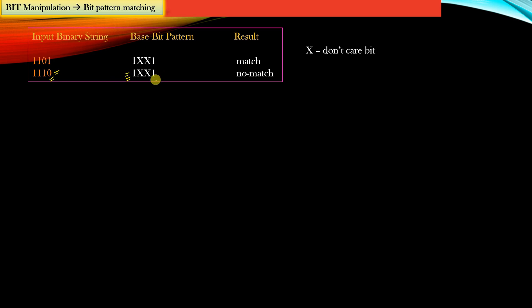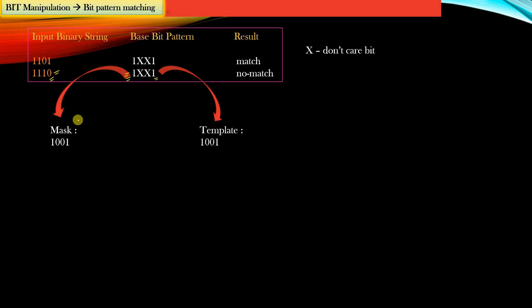For a given base bit pattern, we need to compute two things: the first is called the mask and the second is called the template. In order to compute the mask from the base bit pattern, we need to follow two rules: replace all the bits to be matched by one, and replace all don't-care bits by zero.